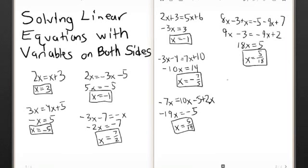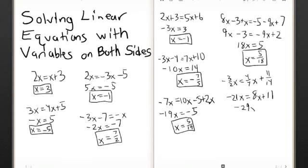Now let's throw in some fractions. Negative 3 over 2 times x equals 4 over 7x plus 11 over 14. Just like in the last video, we want to get rid of these fractions, so we multiply everything by the least common multiple, which is 14. Negative 3 over 2 times 14 is negative 21. 4 sevenths of 14 is 8, plus 11 over 14 times 14 is 11. We get negative 29x equals 11, so x equals negative 11 over 29.